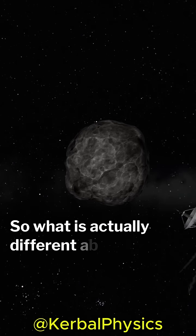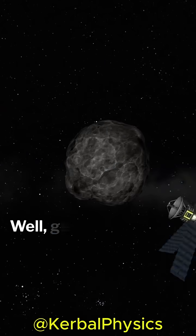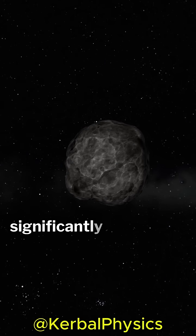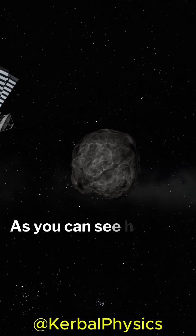So, what is actually different about them? Well, generally, asteroids are always significantly smaller than comets. As you can see here,